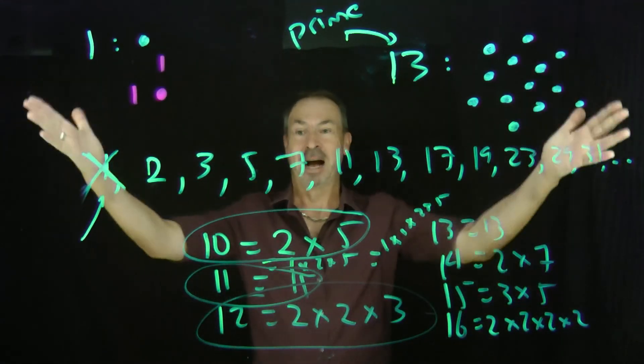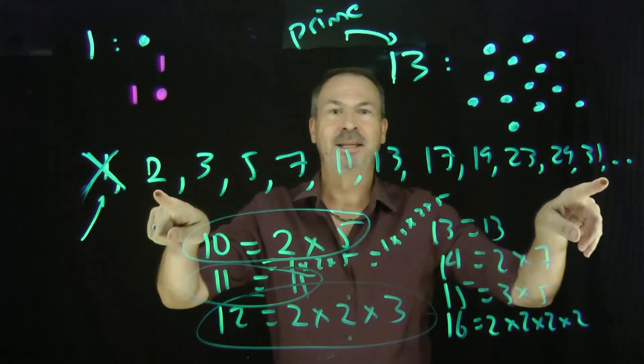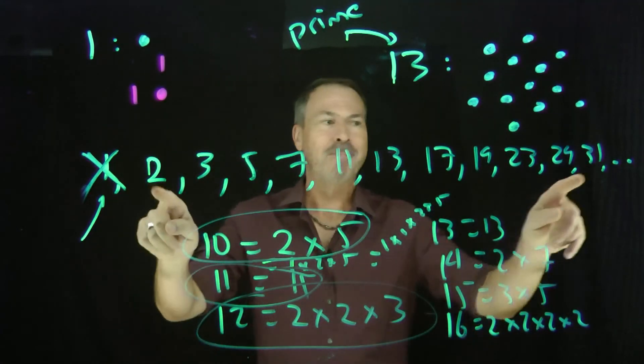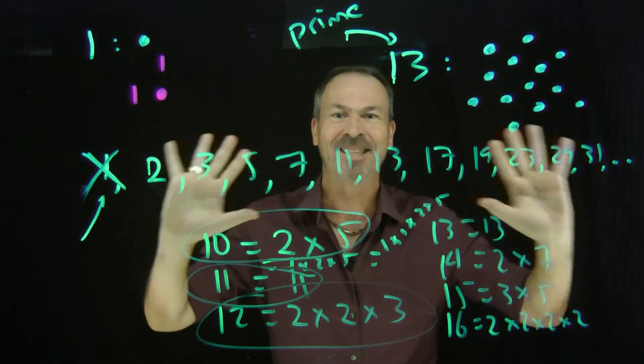But there we are. There's the list of prime numbers. These are all the numbers that resist making rectangles. They only make those degenerate rectangles. And that's it.